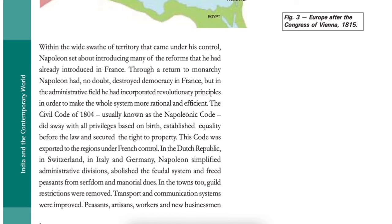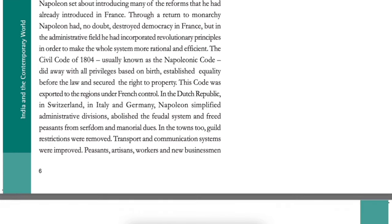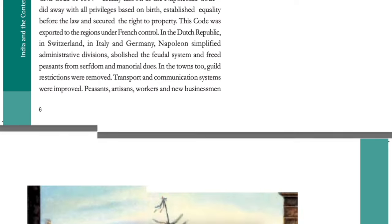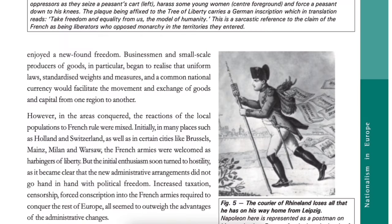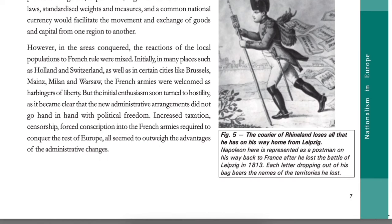This code was exported to regions under French control. In the Dutch Republic, Switzerland, Italy and Germany, Napoleon simplified administrative divisions, abolished the feudal system, and freed peasants from serfdom and manorial dues. In the towns too, guild restrictions were removed. Transport and communication systems were improved. Peasants, artisans, workers and new businessmen enjoyed a new-found freedom. Businessmen and small-scale producers began to realize that uniform laws, standardized weights and measures, and a common national currency would facilitate the movement and exchange of goods and capital from one region to another.